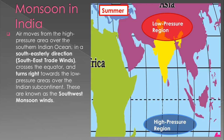High pressure develops in Central Asia, and high pressure areas also develop over the oceans. Air moves from the high pressure area over the southern Indian Ocean in a southeasterly direction, crosses the equator, and turns right toward the low pressure area over the Indian continent. These are known as southwest monsoon winds.